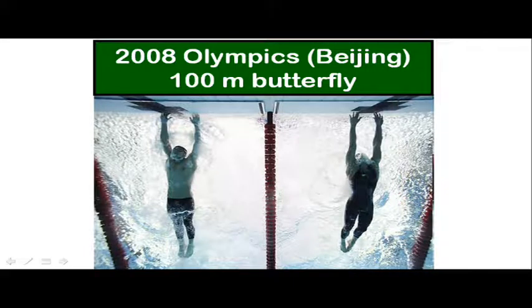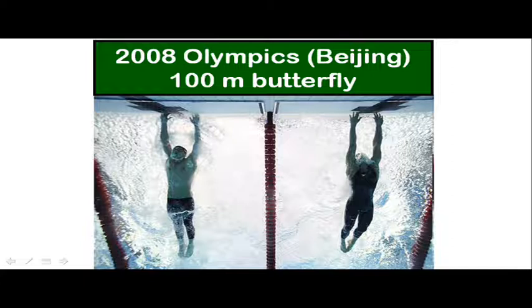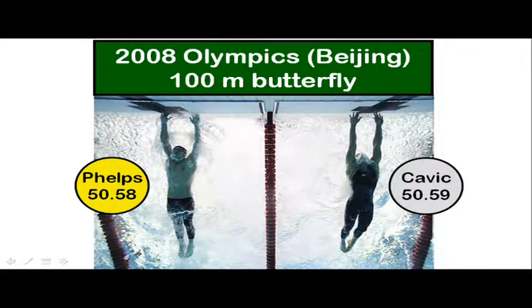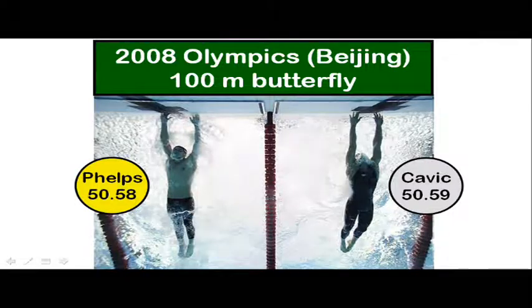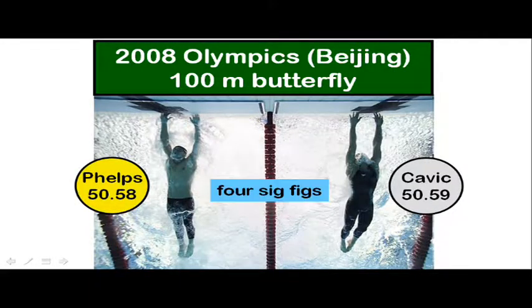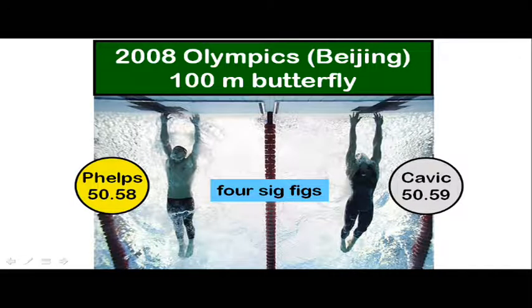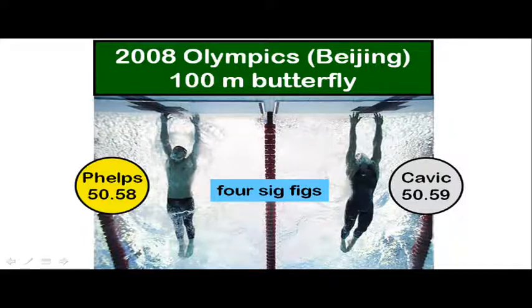In this example, from a swimming event back in 2008 during the Summer Olympics in Beijing, the difference between the gold medal and the silver medal was a mere one-hundredth of a second. Both of these measurements, 50.58 and 50.59, have exactly four sig figs, but that final one-hundredth of a second was very significant in this race.